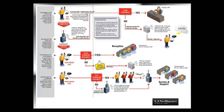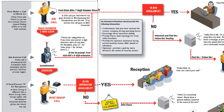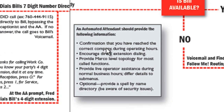Optionally, if someone dialed a number that didn't go directly to an end user like Bill, it might go to an automated attendant: 'Thanks for calling. If you know your party's four-digit extension number, go ahead and dial it at any time during this call.' A good automated attendant should confirm that you've reached the company during business hours, encourage the caller to enter a specific number of digits to call someone, provide top-level macro navigations like accounting or customer service, and optionally enable the spell-by-name directory.